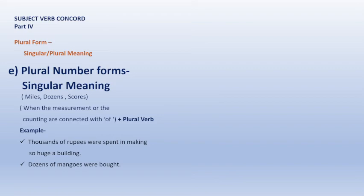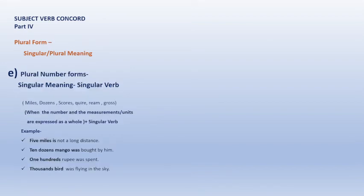Plural form singular meaning: miles, dozens, scores, rupees, grams. These are the words that are actually measurements or units. If all these measurements are connected with the numbers, in such cases we always use singular verb. One hundred rupees was spent. Thousands of birds was flying in the sky. Five miles is not a long distance.